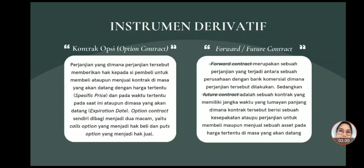Apa itu kontrak opsi? Option contract adalah sebuah perjanjian di mana perjanjian tersebut memberikan suatu hak kepada si pembeli untuk melakukan pembelian ataupun menjual kontrak yang ia miliki di masa yang akan datang pada waktu tertentu. Option contract ini sendiri dibagi menjadi dua, yaitu call option yang menjadi hak beli dan put option yang menjadi hak jual. Pembeli atau pemilik call mempunyai hak untuk melakukan pembelian terhadap sebuah aset tertentu dengan nominal harga yang telah ditentukan di masa depan sesuai tanggal yang telah ditentukan. Sedangkan pembeli atau pemilik put memiliki hak untuk menjual sebuah aset pada harga serta tanggal tertentu di waktu yang akan datang.